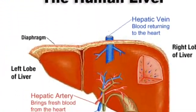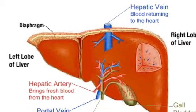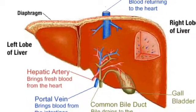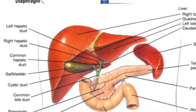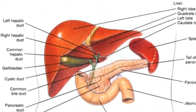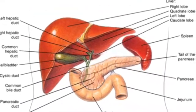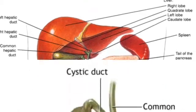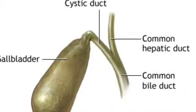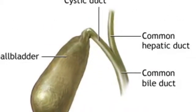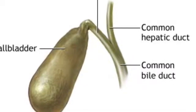The liver is 3 pounds and sits to the right in the abdomen. The liver makes bile, which is used in digestion. It also filters blood and helps maintain blood sugar levels. The bile that the liver makes is stored in the gallbladder. Bile helps break down fats and enters the duodenum through the common bile duct.